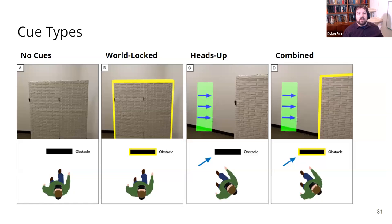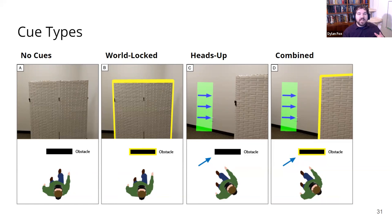Here's how we implemented those four experimental conditions. The first is no cues — you're wearing the HoloLens but it isn't showing anything. This is different from the control condition where you're not wearing the HoloLens at all, but it's important because we want to measure the effects of wearing the headset itself. Our second condition is world-locked, with a bright yellow border applied to each obstacle. It makes low-contrast obstacles much easier to see, but only if you're looking right at them. It had a range of up to five meters and could apply to multiple obstacles simultaneously, and we hypothesized it would be useful for people with poor visual acuity or poor contrast sensitivity.